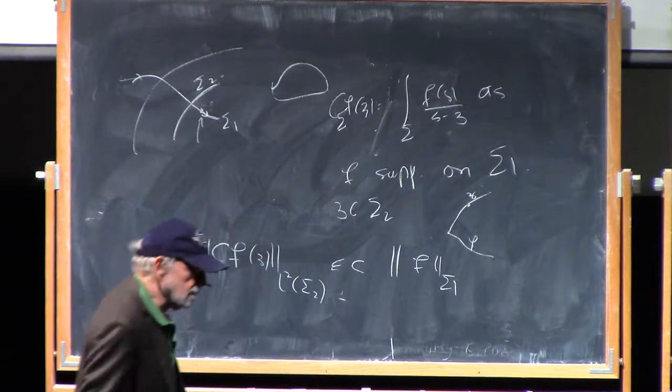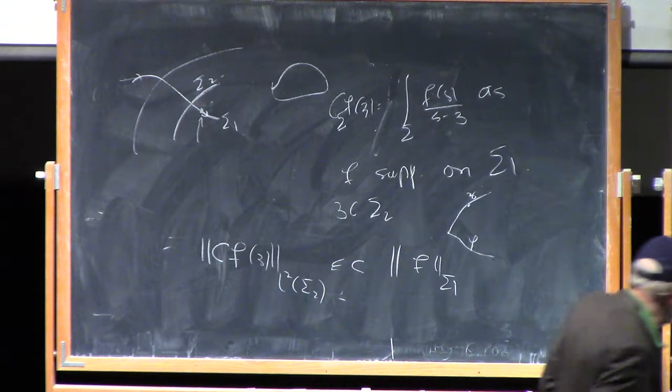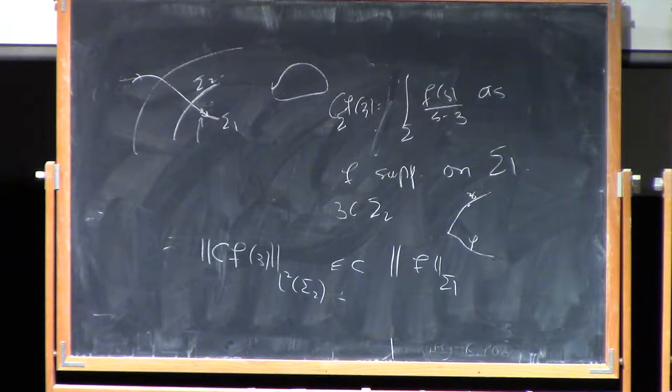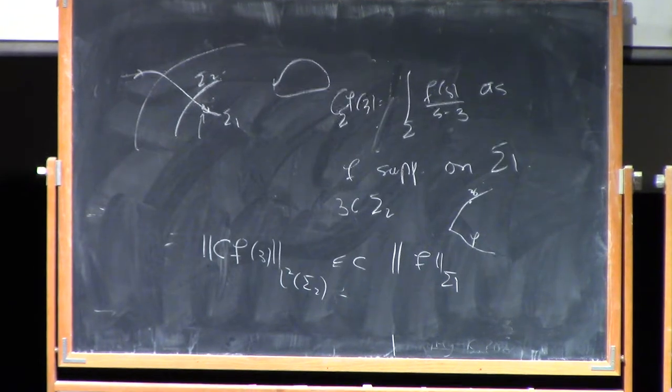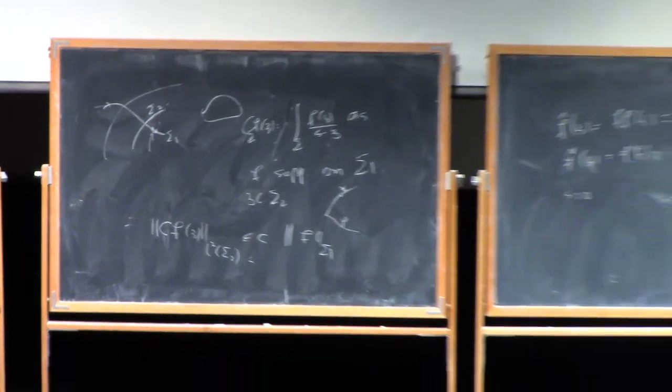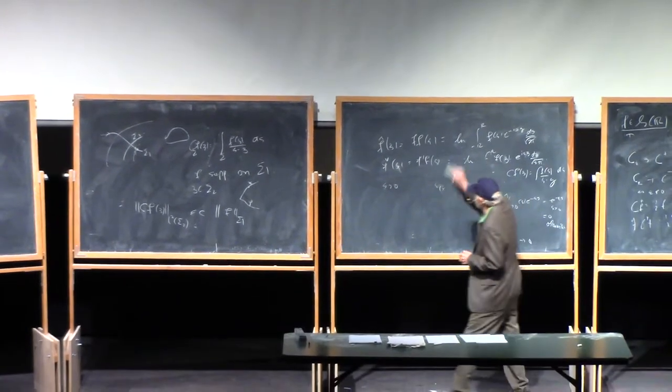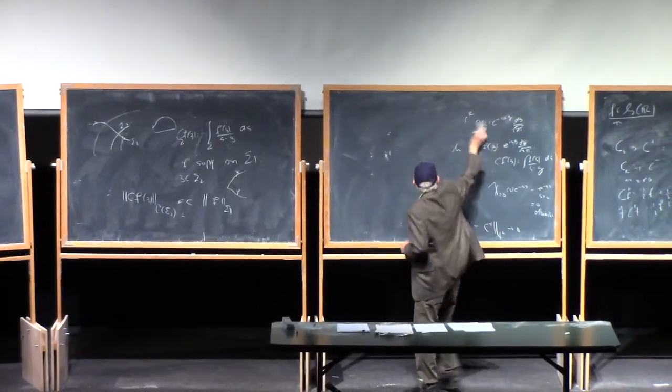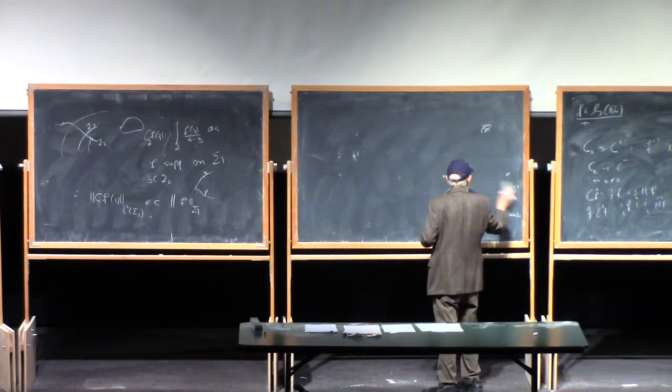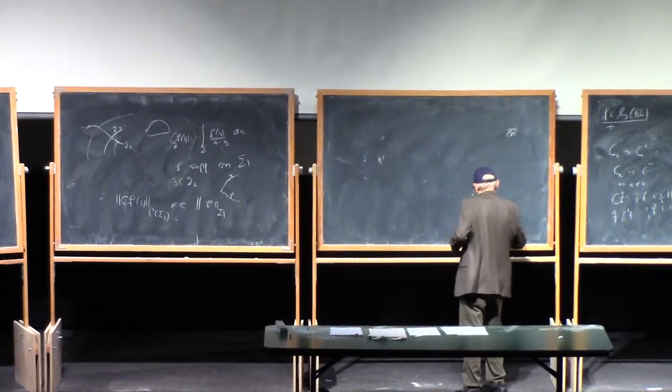Now, there's a very nice calculation which one can make again using Fourier theory, but now using Fourier theory of the multiplicative group on the positive numbers, which is the same thing as the Mellon transform. And so it's a very nice exercise to show the following.